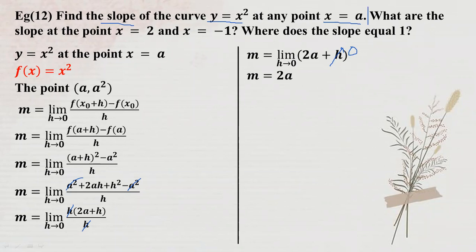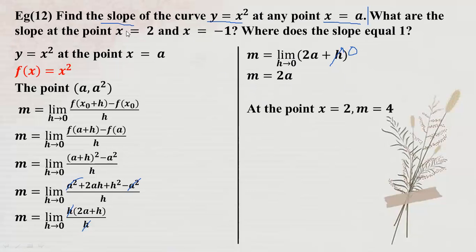Now, what are the slopes? What is the slope at the point x equal to 2? And what is the slope at x equal to minus 1? Let's find the slope at x equal to minus 1.